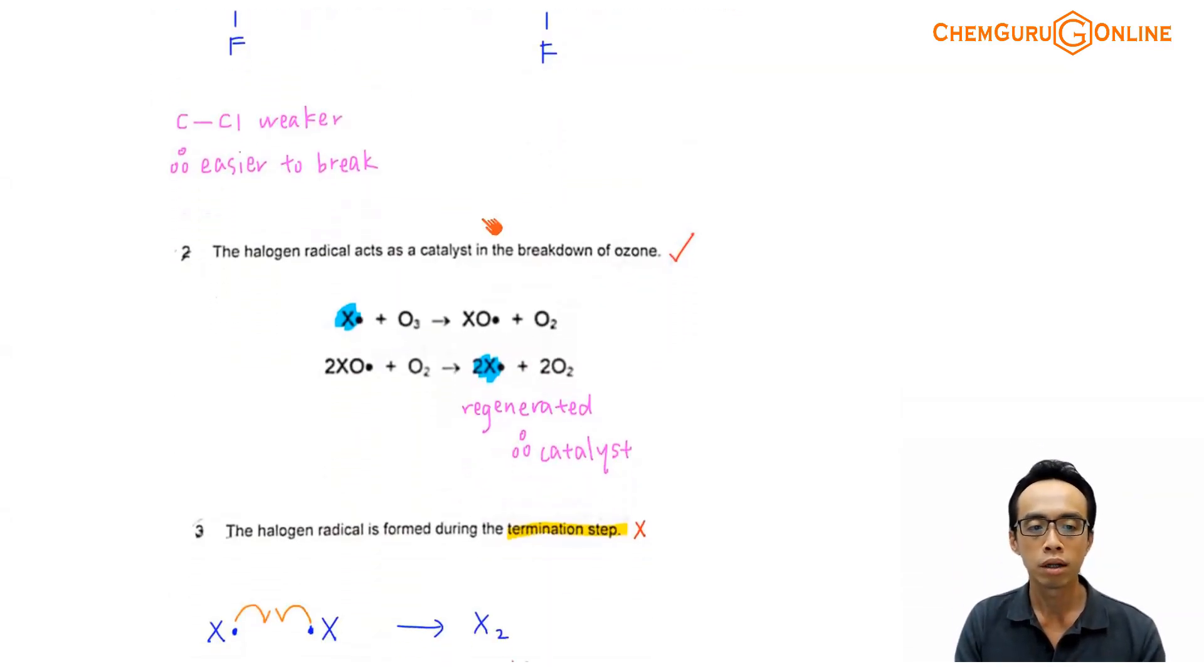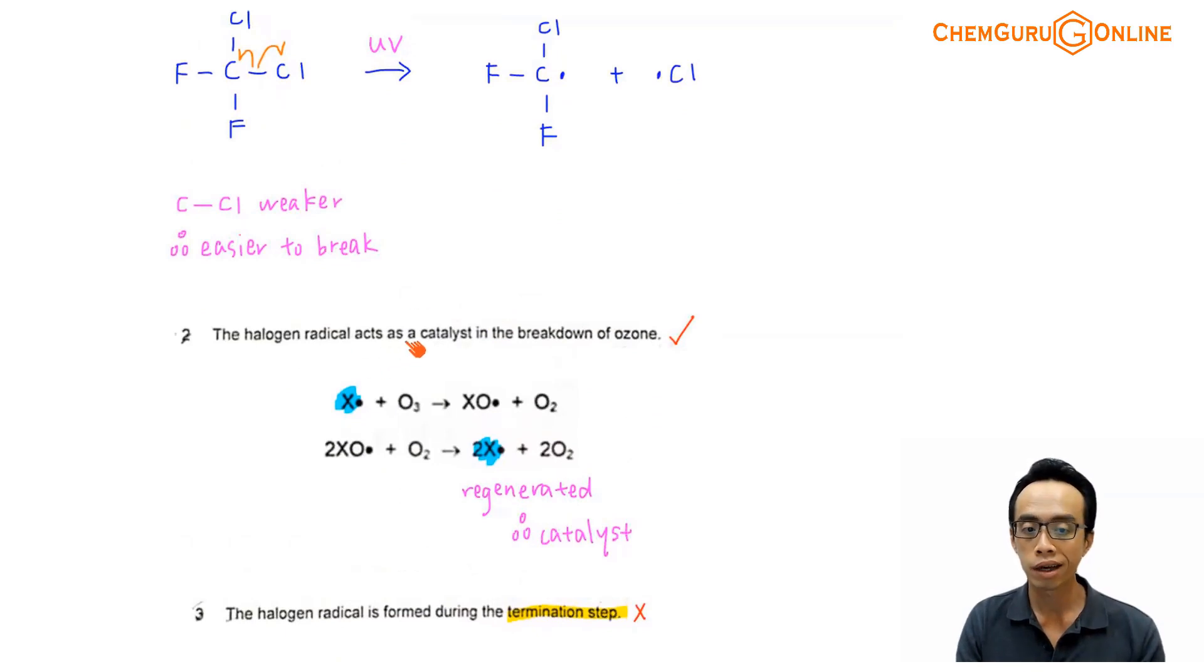Next, how about statement number two? Now statement number two, we have our halogen radical acts as a catalyst in the breakdown of ozone. Now if you look at the two steps that is shown in the exercise, my halogen radical reacts with my ozone and then convert it to O2. And itself, it forms this XO dot intermediate. Second step, this XO dot intermediate will be forming back our X dot. That means I'm regenerating my halogen radical. It comes back and it means that if it is regenerated, it should be the catalyst. Because catalyst will be regenerated at the end of the reaction and this radical can be used for subsequent reaction of ozone. Breakdown ozone to O2 and the reaction will continue. So involving step number two, I think this is valid. Step number two is correct.